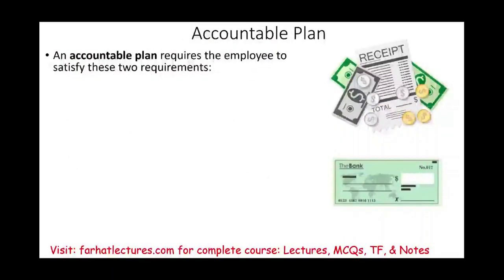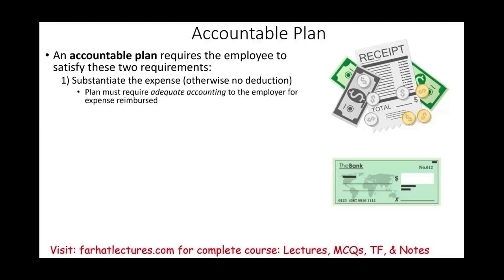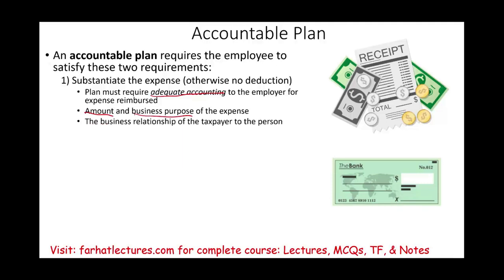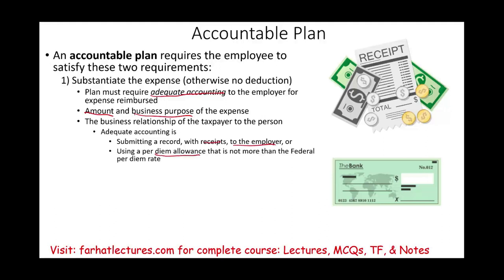The accountable plan requires the employee to satisfy two requirements. The first is to substantiate the expense — otherwise you cannot have a deduction. Substantiate means you have to provide evidence: receipts, canceled checks, purpose of the meeting, purpose of the expense, and the business relationship. The plan must require adequate accounting to the employer for expenses reimbursed — you have to submit the amount, the business purpose, and the business relationship. Alternatively, you can use the per diem allowance, which must be no more than the federal per diem rate.